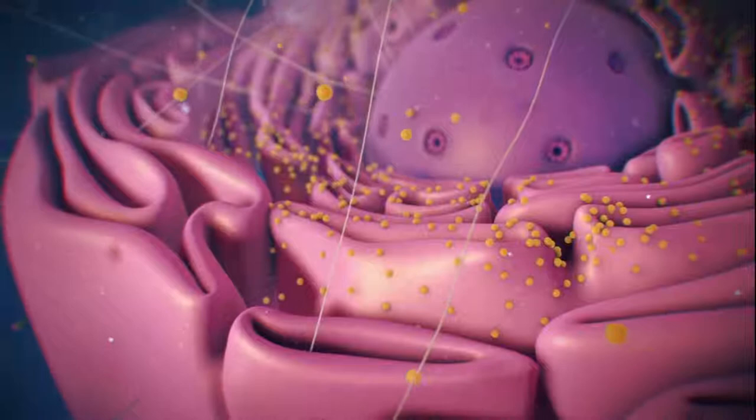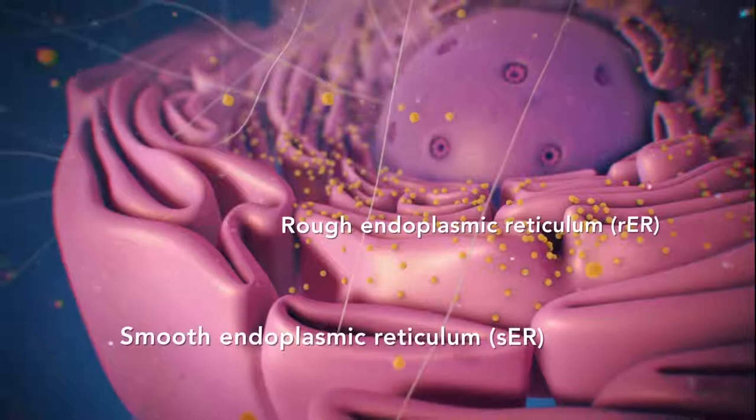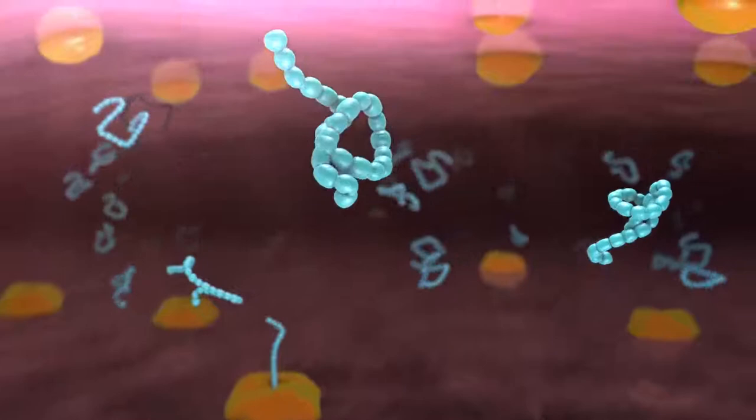Rough ER has ribosomes attached to it, and smooth ER doesn't have ribosomes attached to it. The endoplasmic reticulum is a membrane-enclosed passageway for transporting materials, such as the proteins synthesized by ribosomes.